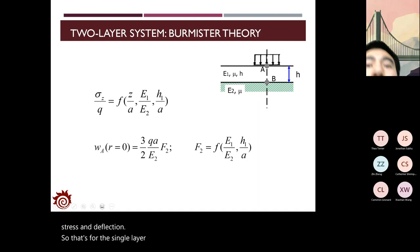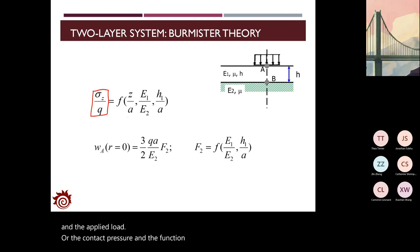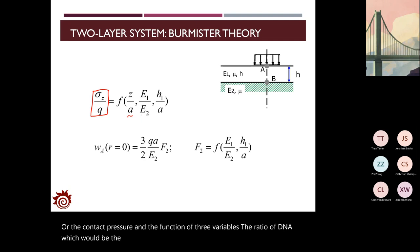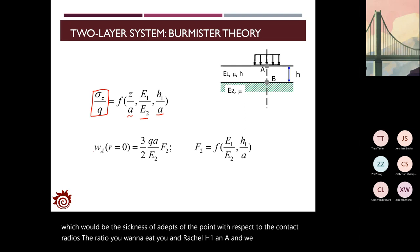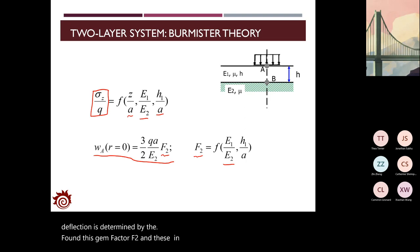For the two-layer system, we apply Burmister theory. In this theory, the ratio of vertical stress to the applied load or contact pressure is a function of three variables: the ratio of z to a (depth to contact radius), the ratio of E1 to E2, and the ratio of H1 to a. We can also find deflection at the centerline of the contact area, determined by a strain factor F2, which is a function of the ratios of E1/E2 and H1/a.